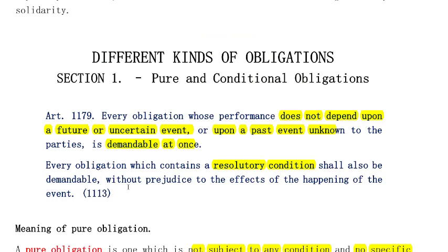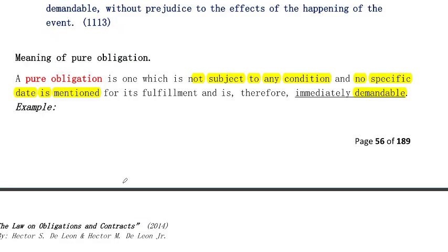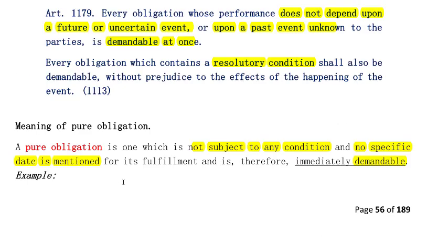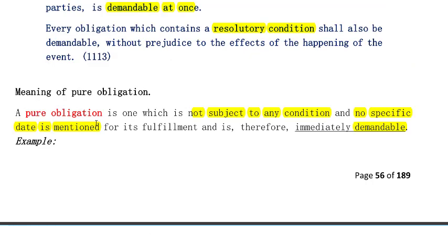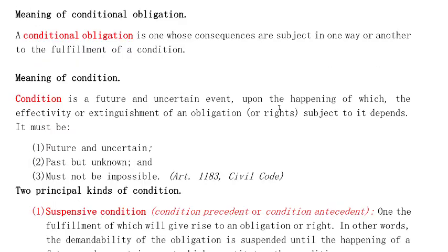Let's look at Article 1179, paragraph 2. Paragraph 2 tells us about an obligation that contains a resolutory condition. But before that, since we have already defined what a pure obligation is, let's also touch on conditional obligations. What is a conditional obligation? A conditional obligation is one with a condition imposed upon its performance. So what is a condition? A condition is a future and uncertain event.